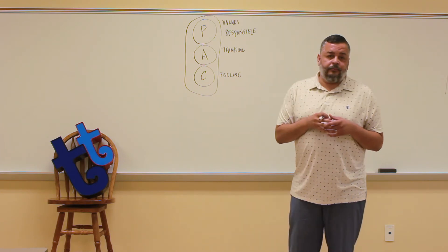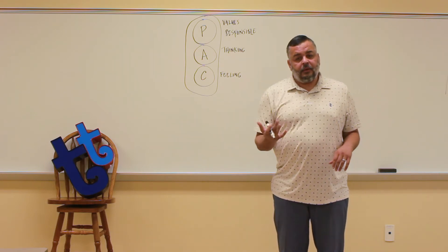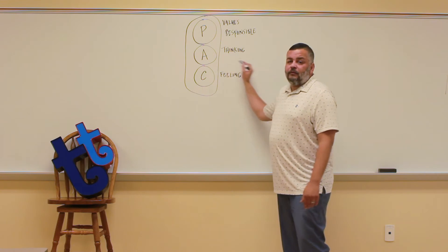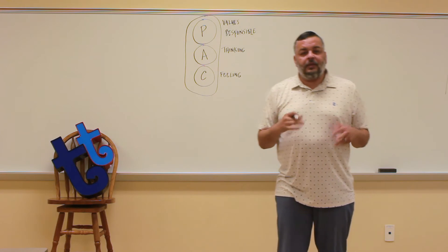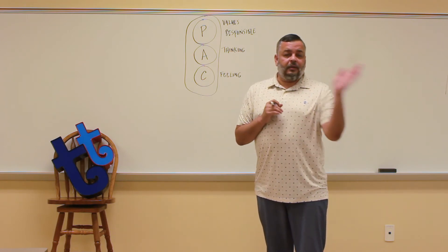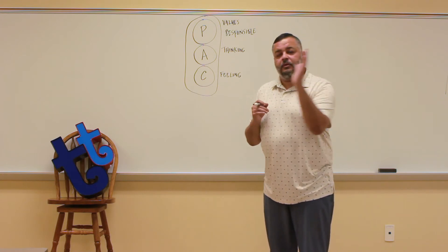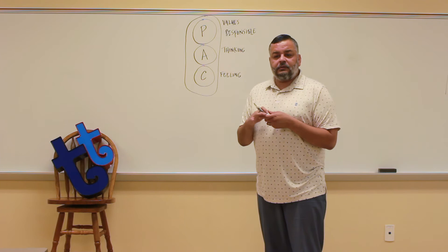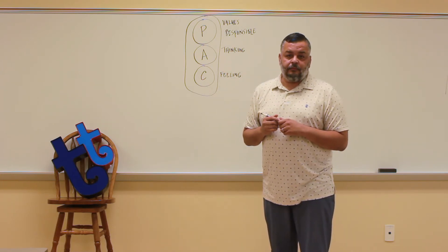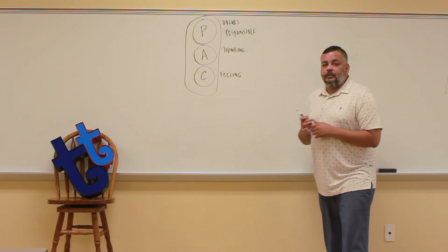It doesn't matter whether you're three or forty-six — we all have an adult ego state. We're born with all three, and you can see that very easily if you've ever been around small children. You can see children being very parental, very adult-like, and also very childlike. In our adult ego state, this is where we do all of our best thinking and where we make decisions. The adult ego state thinks in linear and logical ways because it's where we learn to problem solve.